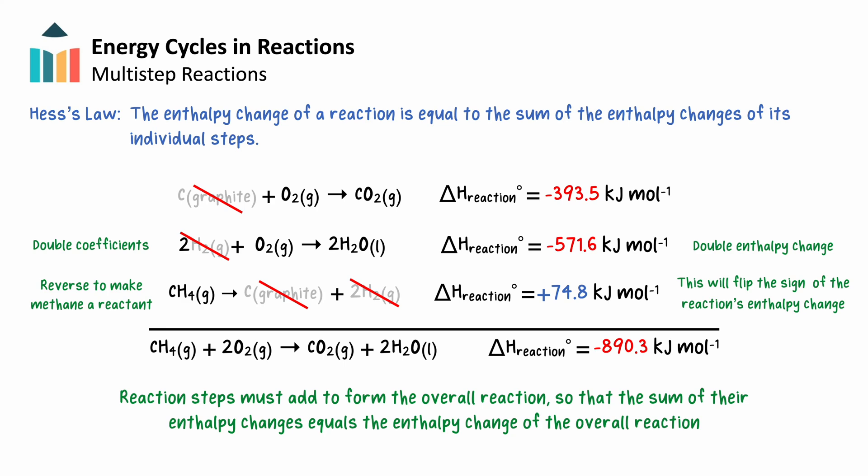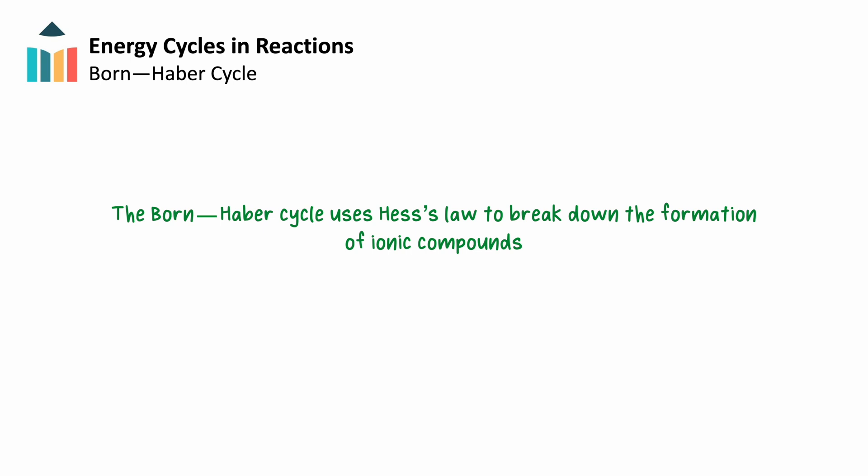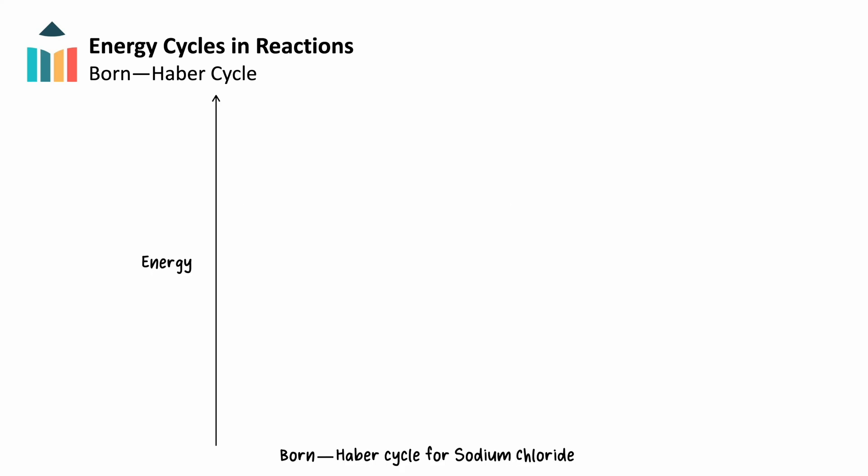By applying Hess's law to multi-step reactions, we can calculate enthalpy changes even when direct measurements are not available. Our final application of Hess's law is the Born-Haber cycle, which breaks down the formation of ionic compounds into multiple steps. We'll examine the formation of sodium chloride, NaCl. To find the enthalpy of formation for sodium chloride, we must consider the energy requirements of each step in the process of turning sodium and chlorine in their natural states into a solid lattice of sodium and chloride ions.